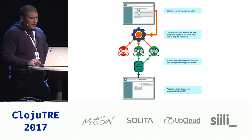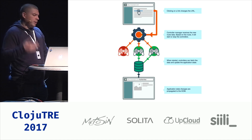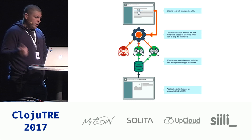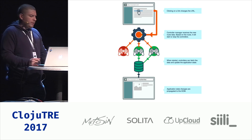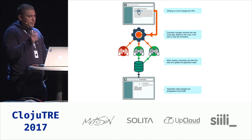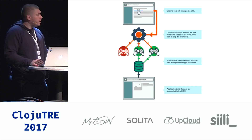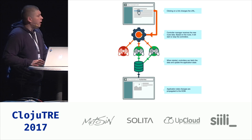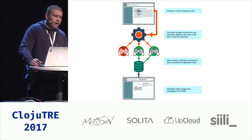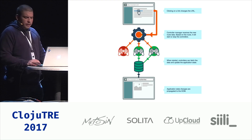Just to recap: when the user clicks on a link, the URL will change. The controller manager receives the new route data, and it will do something with the controllers — maybe start them, maybe stop them. They can react to this and load the data or clean up the data, and finally the changes will be propagated to the UI in the same manner as other frameworks.